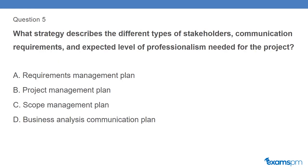Question 5: What strategy describes the different types of stakeholders, communication requirements, and expected level of professionalism needed for the project? A. Requirements management plan. B. Project management plan. C. Scope management plan. D. Business analysis communication plan.